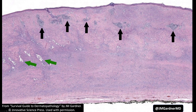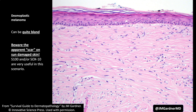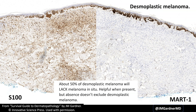Here are some pictures from my dermatopathology survival guide to highlight what we discussed. On one side we have S100 with striking staining throughout the dermis, and on the other side those atypical spindle cells are totally negative for MART-1. This particular case had a tiny nested component and a melanoma in situ component that stained with MART-1, but the rest of the lesion was totally negative and only stained with S100. This illustrates that MART-1 and HMB-45 are usually not present in pure desmoplastic melanomas.